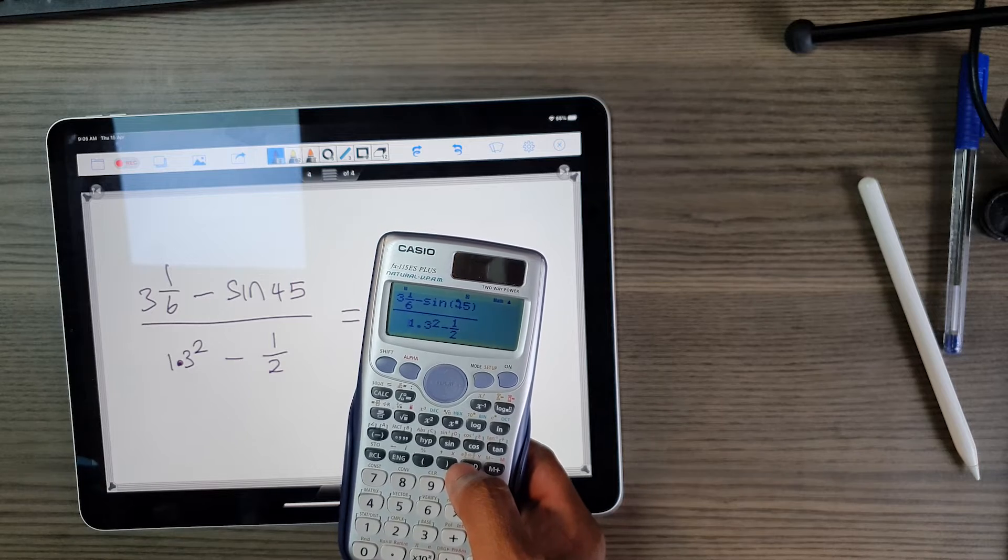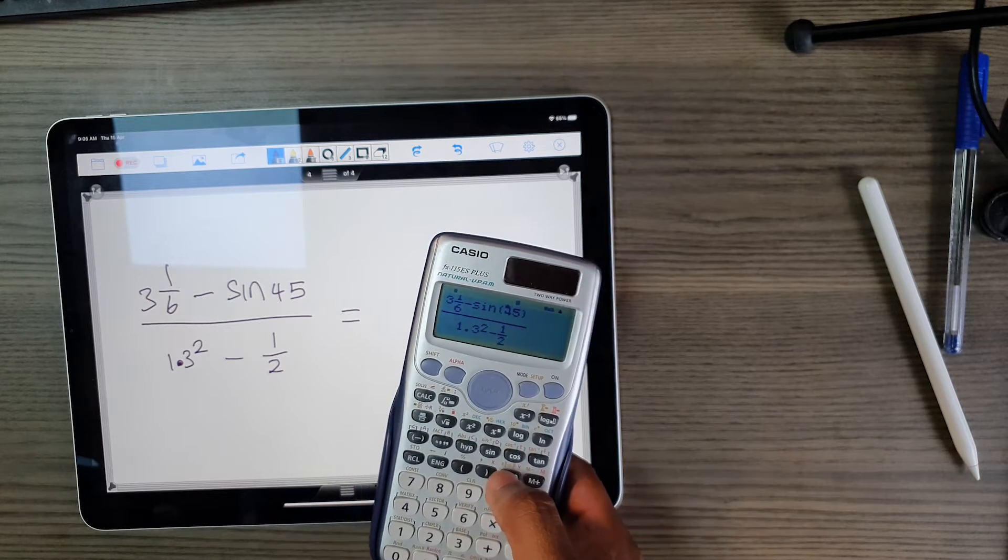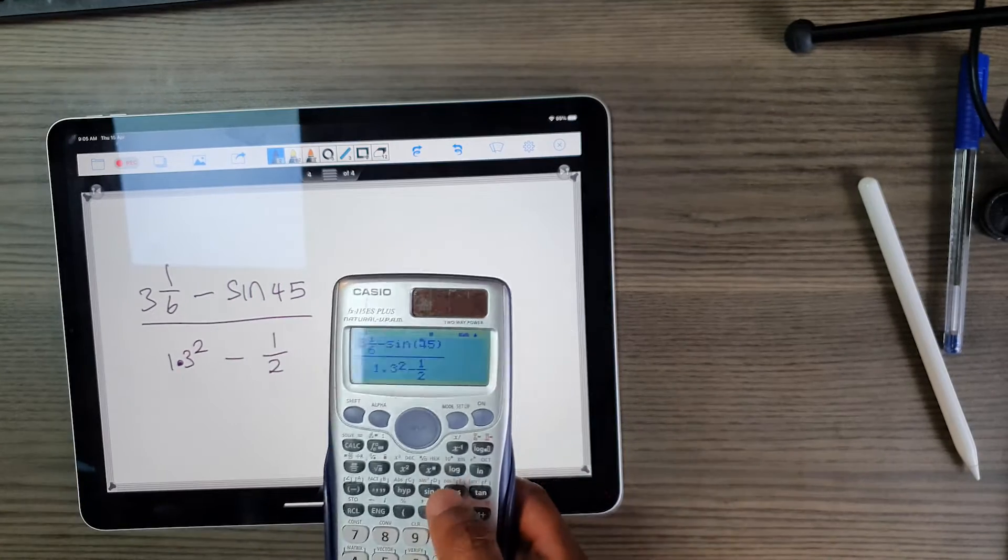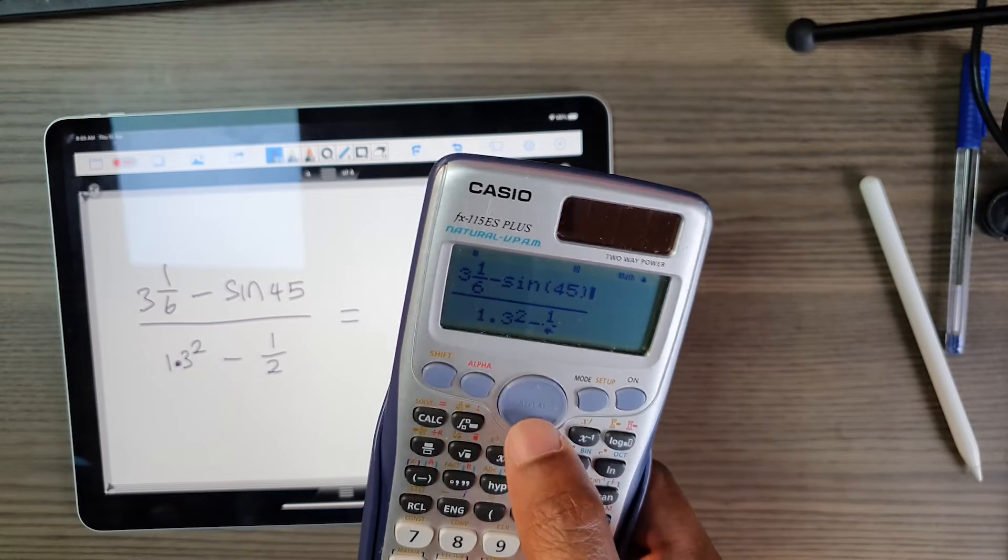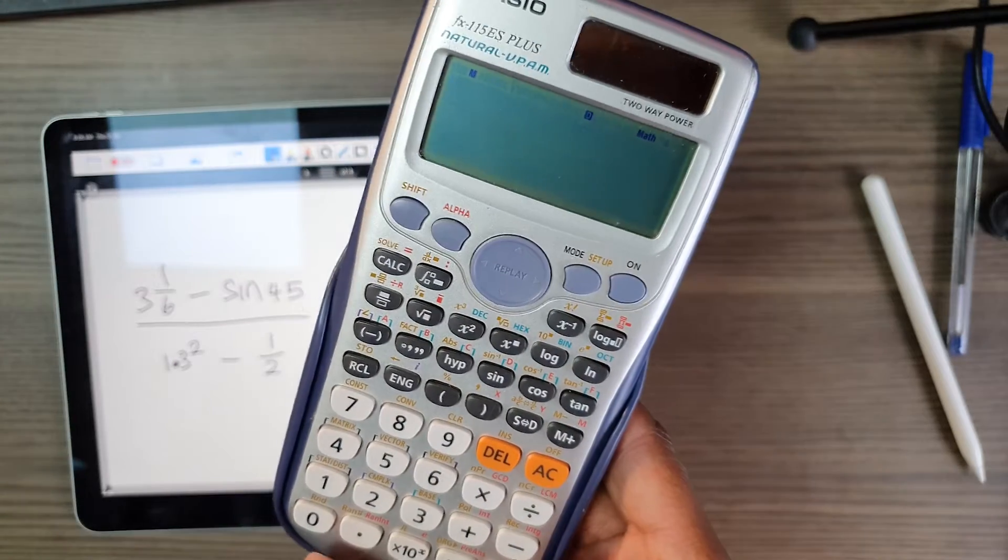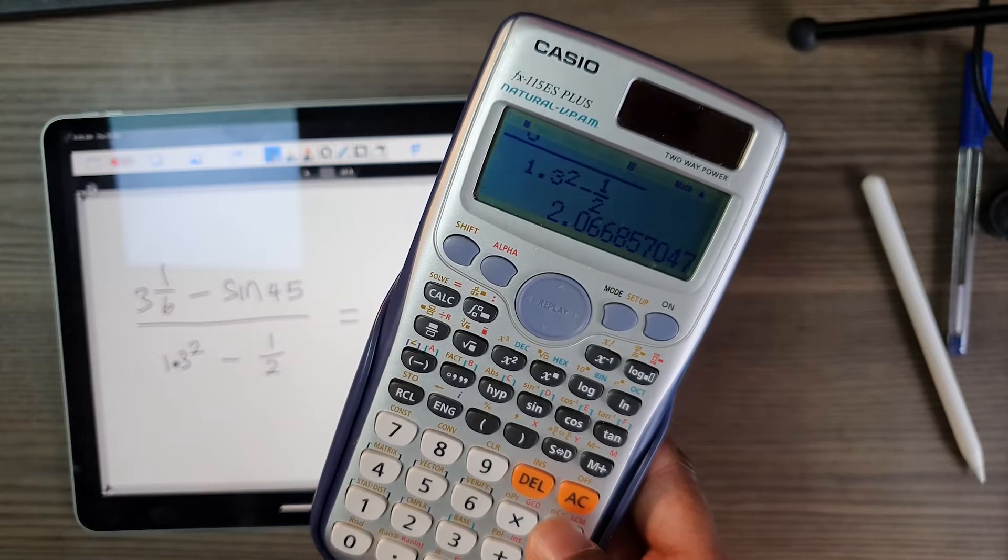You could actually verify that it's the same exact thing on the test paper. This is a classic CXC maths question in the first question. You can press equal.